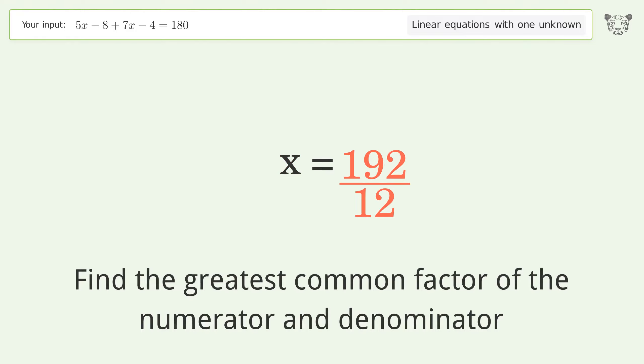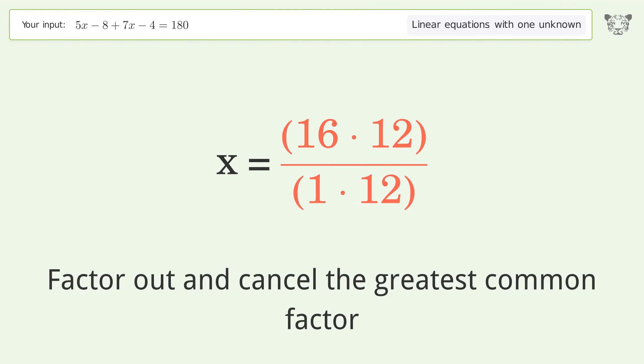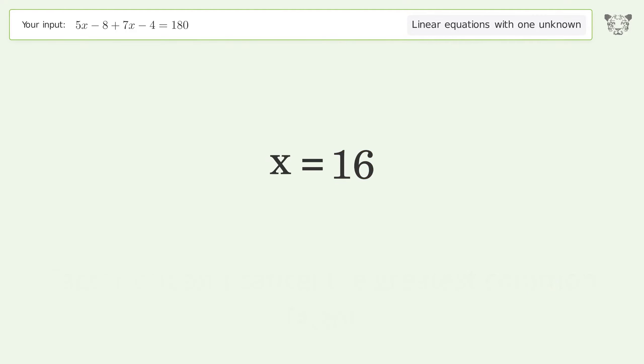Find the greatest common factor of the numerator and denominator. Factor out and cancel the greatest common factor. And so the final result is x equals 16.